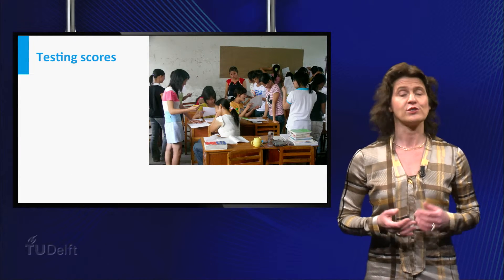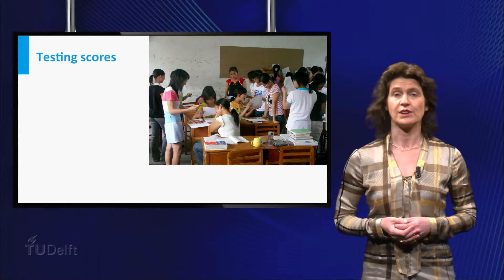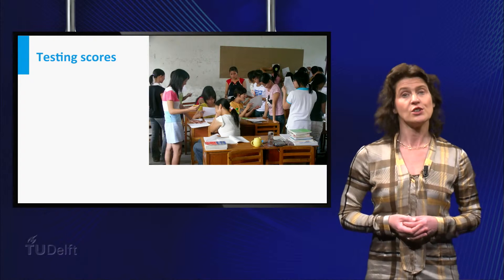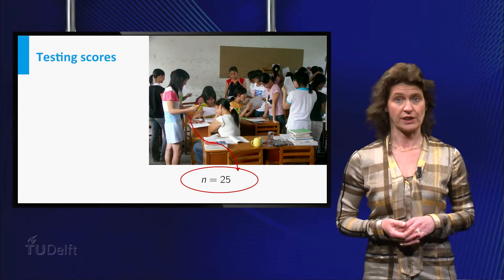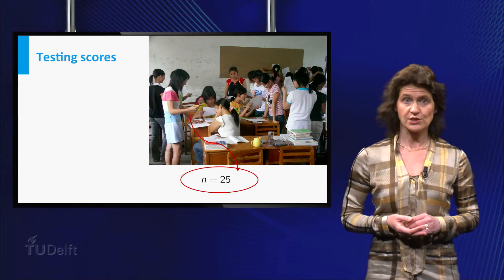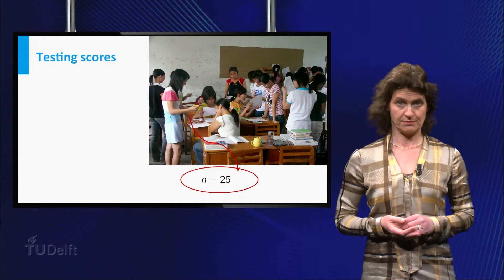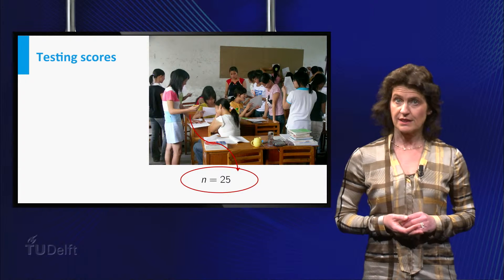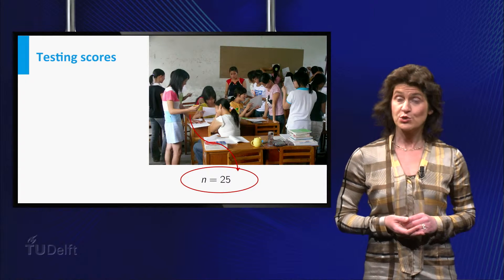So let's go back to our example of school kids doing an arithmetic test. Suppose you choose 25 children at random and suppose that their average score on the test turns out to be 56 points. Is it a coincidence that the score is below the national mean score or not?